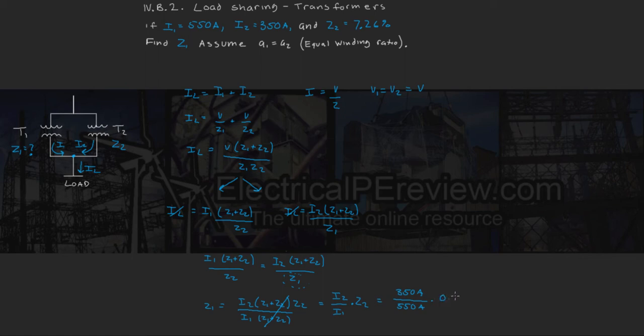0.0726. And we do the math, and we come up with 0.0462, or our impedance for transformer one is 4.62%.